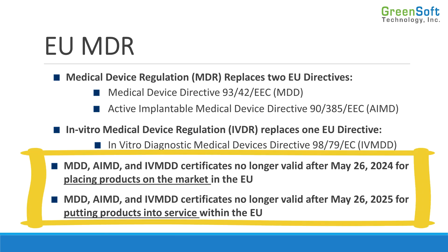For existing certificates under the MDD, AIMD, or IVMDD, companies can still use those to place products on the market until 2024. The MDR becomes mandatory in 2021 with a three-year transition, but those certificates have a lifespan of four to five years, so they can be used out. Certificates must stop being used for placing products on the market by May 2024, and can no longer be used to place products in service after 2025 for high-risk items. There are two sets of dates: when the certificates themselves are no longer applicable, and when new certificates must be obtained.